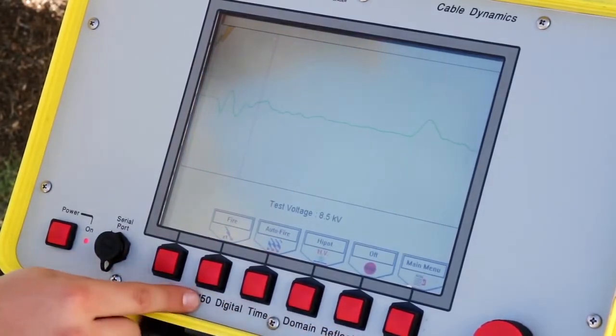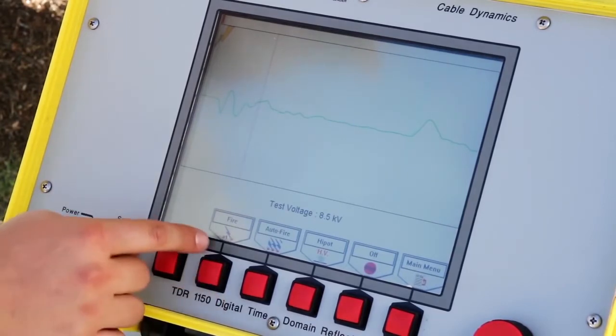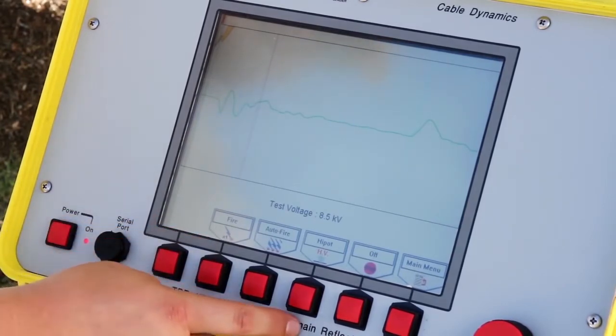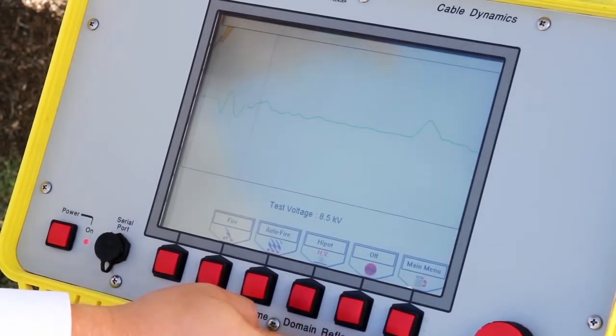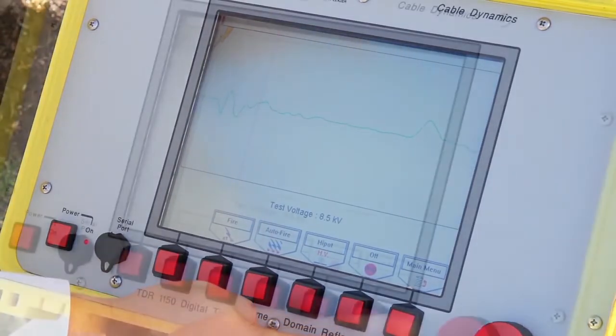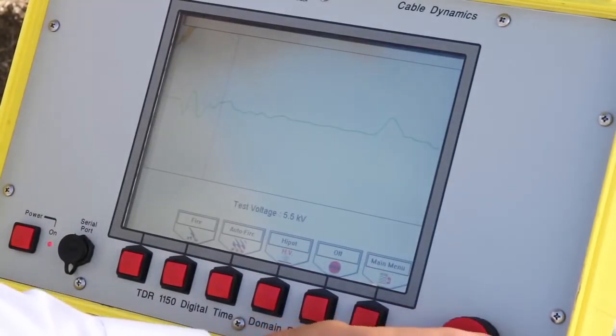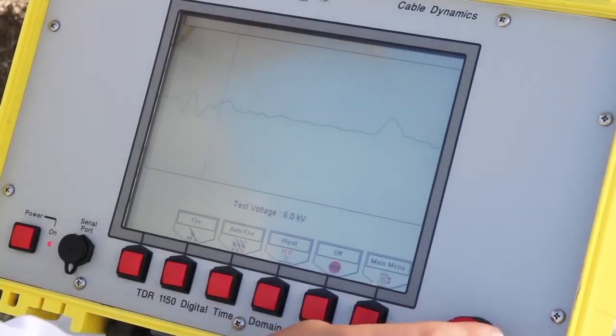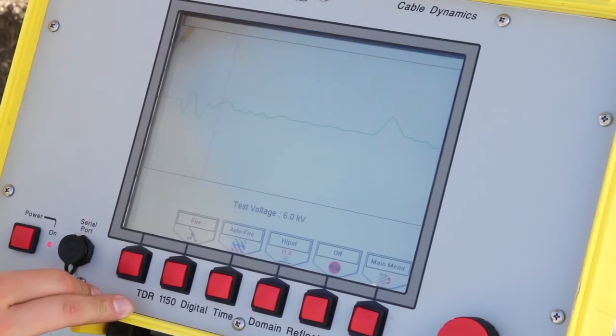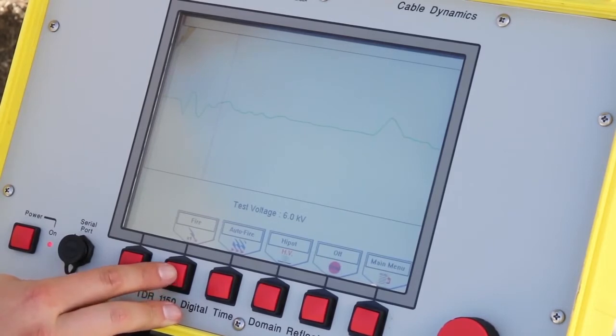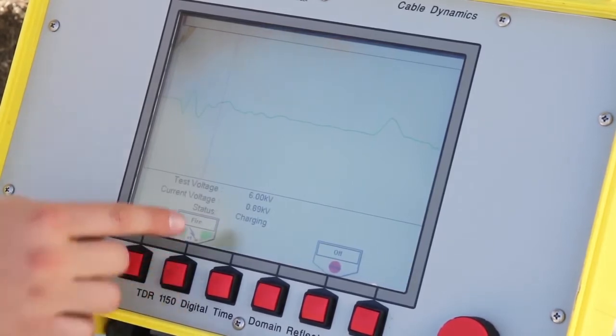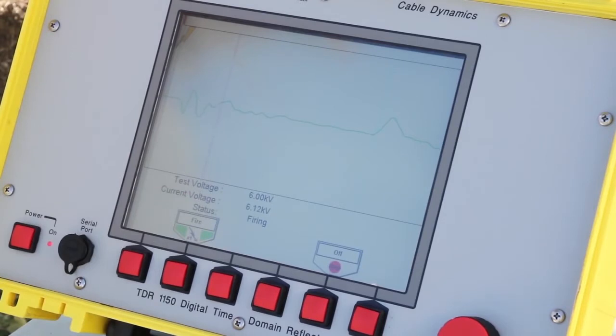Now our high voltage options will be displayed on the screen here: fire, auto fire, high pot, off, and main menu to go back to the measure sample. At this point, we can adjust our test voltage either up or down in 500 volt increments. So we'll test at 6 kV, and again, we're in arc reflection, so we want one impulse through the cable. We'll press fire, the unit will begin charging, and then it will discharge once it reaches the voltage.